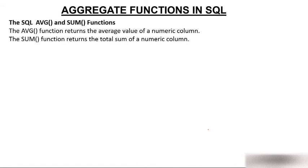Now we have two remaining functions: SQL AVG and SUM. The average function returns the average value of a numeric column. You can only find the average of a numeric value — you cannot find the average of names. Similarly, SUM is also applicable on numeric values only. You cannot apply SUM on names or characters — concatenation is different, but SUM is only for numeric values.